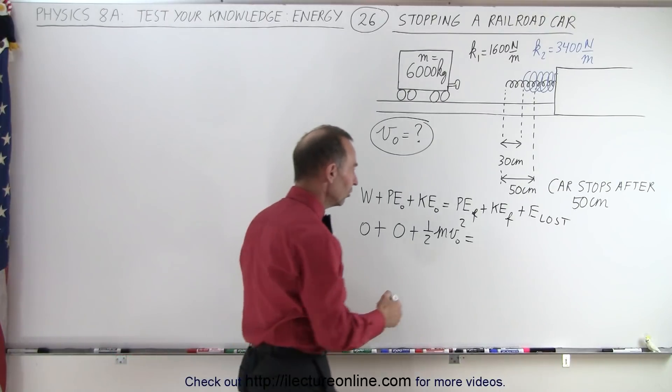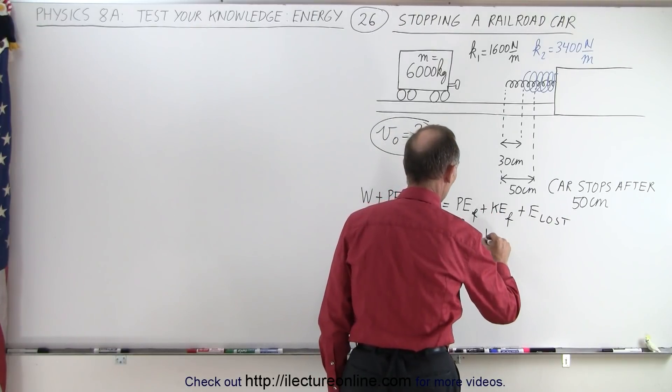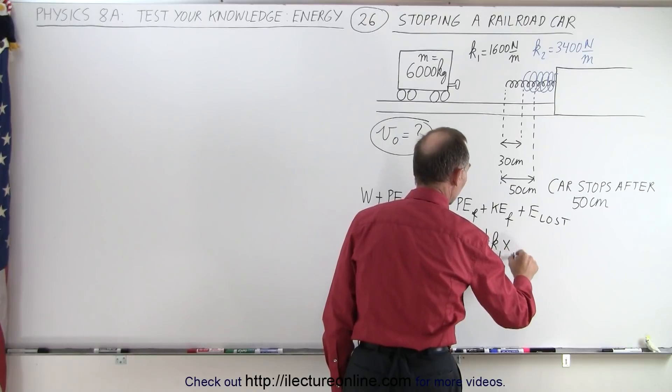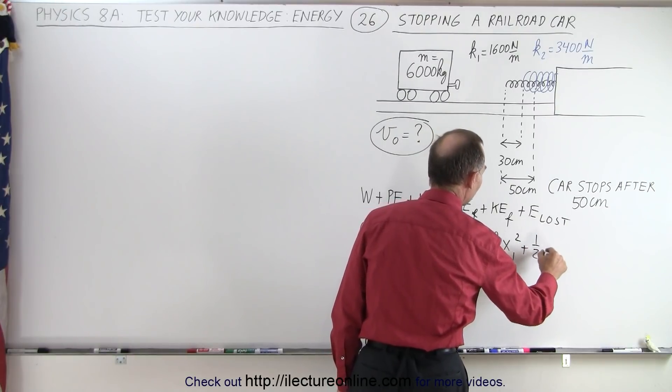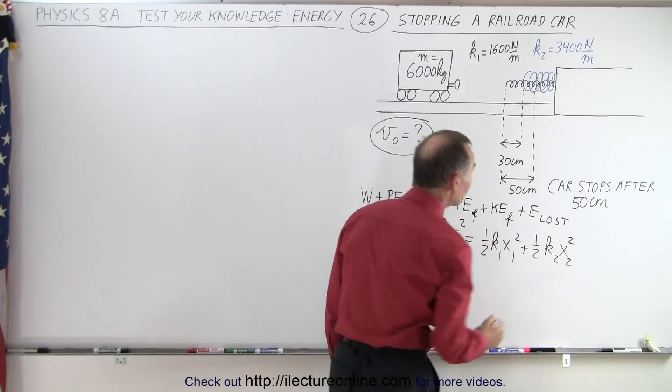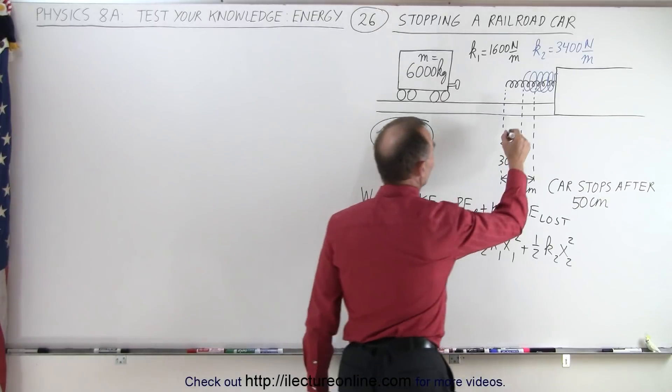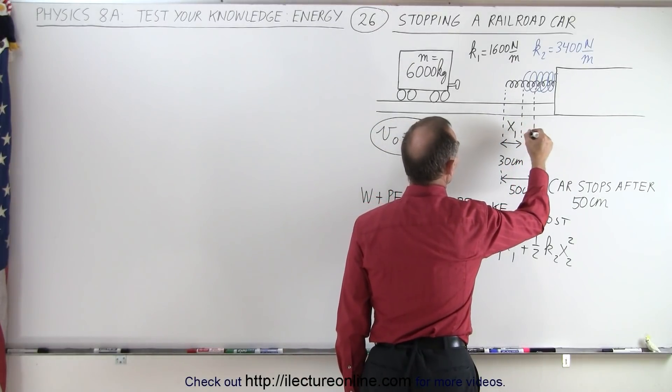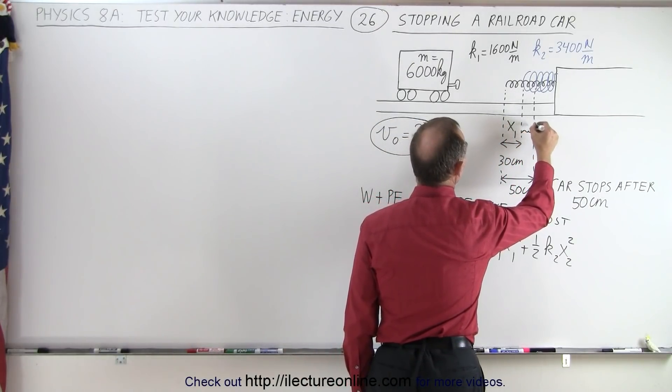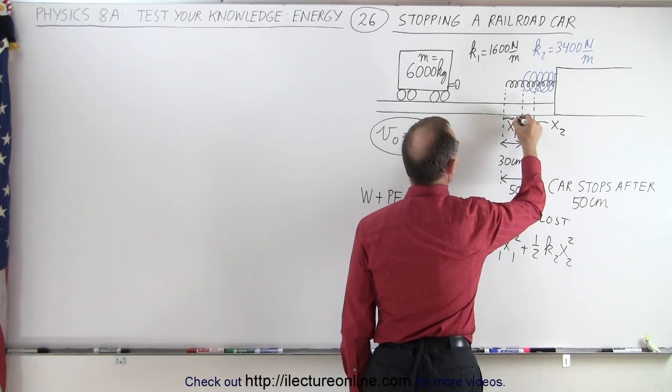The final energy is potential energy. Sure enough, there's two springs. It would be one half k1 x1 squared plus one half k2 x2 squared, where x1 and x2 are the individual amounts that they were compressed. So x1 would be this distance right here and x2 would be this distance right here.